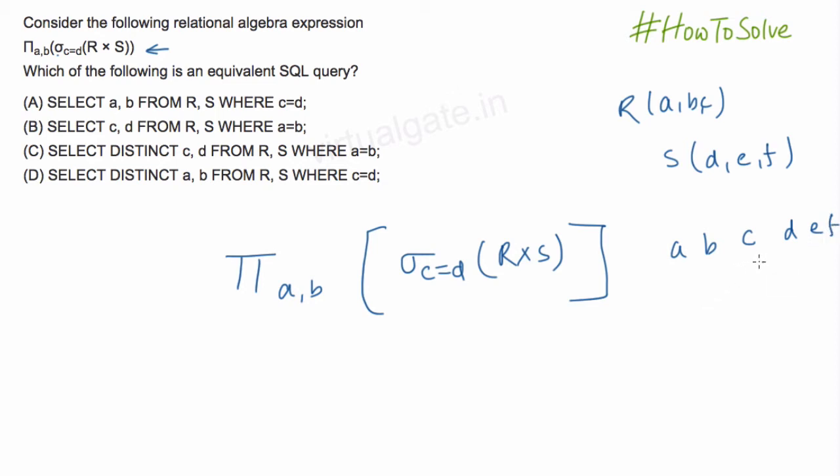And it will compare, once we have the select, it will only return those rows for which this C is equal to D. Now, up to this step we have a relation in which there are 6 attributes, but we have to filter out and we want only A and B. So we will use this project operator and we will just take A and B out.